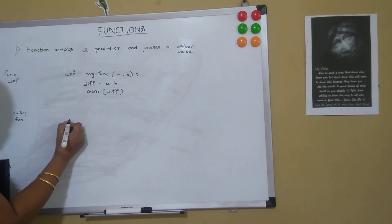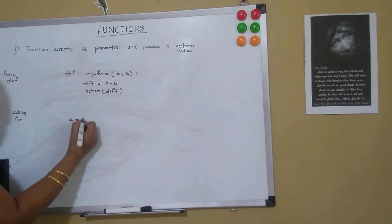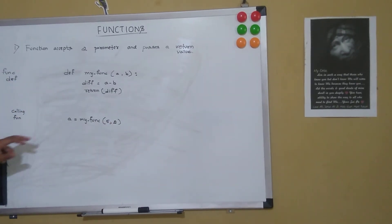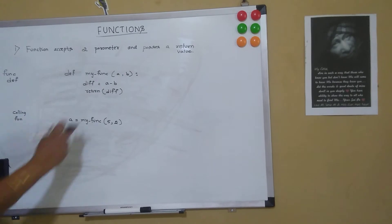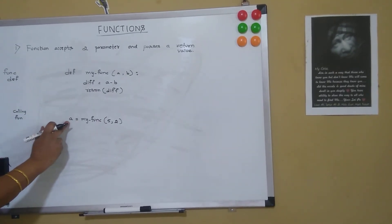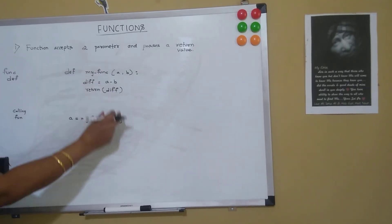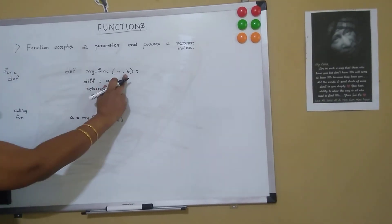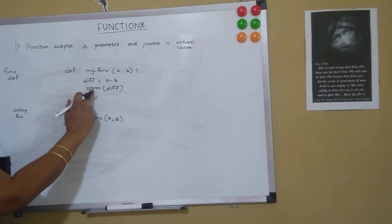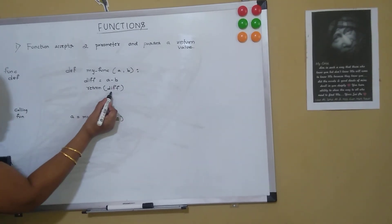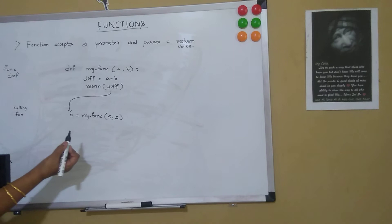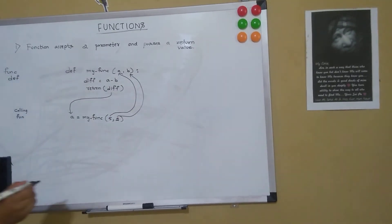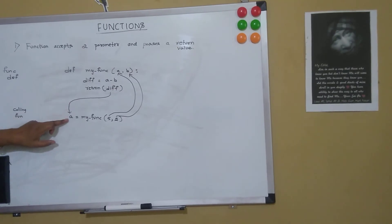The calling function will have: var = my_function(5, 2). Since it is having a return value, I have to store it in a variable. When I do this, 'a' will have the value 5, 'b' will have the value 2, difference is 5 minus 2 which is 3. So the value 3 will be returned and stored in 'var'.